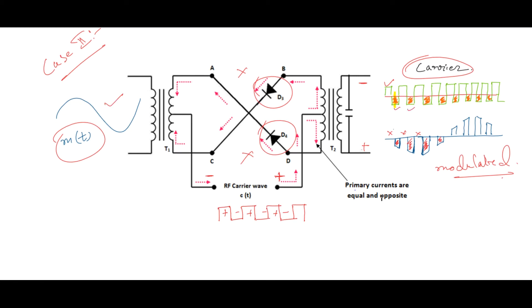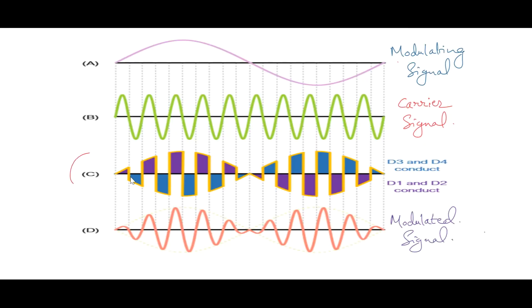Now on combining these two modulated waves from Case 1 and Case 2, we get waveform C. Here, waveform A is the actual modulating signal, B is the carrier signal, C is the output of ring modulator, and D waveform is the modulated signal obtained after filtering waveform C.